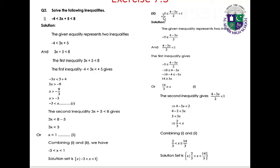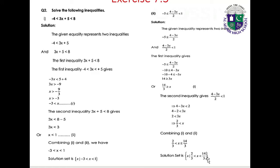Part 2: minus 5 less than or equal to (4 minus 3x)/2 less than 1. First inequality: minus 10 less than or equal to 4 minus 3x, giving minus 14 less than or equal to minus 3x, so x less than or equal to 14/3. Second inequality: 4 minus 3x less than 2, giving 2 less than 3x, so x greater than 2/3. Combining: 2/3 less than x less than or equal to 14/3. Solution set: {x | 2/3 < x ≤ 14/3}.